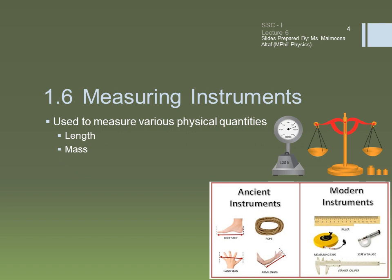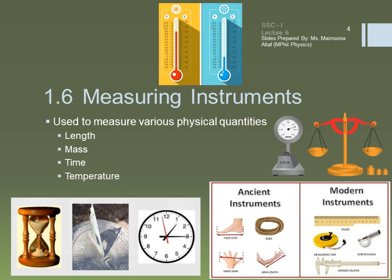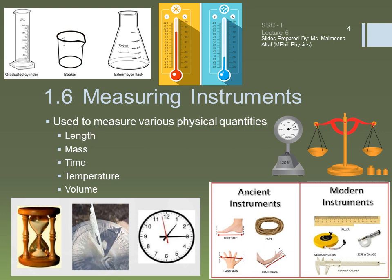For the measurement of mass, we can use any type of balance such as the physical balance, beam balance, lever balance, or the electronic balance. For the measurement of time, sand clock, sundial, simple clock, stopwatch, water clock, and other time measuring devices can be used. For temperature, we can use the thermometer, and for volume, we can use either the graduated cylinder, beaker, or a flask.